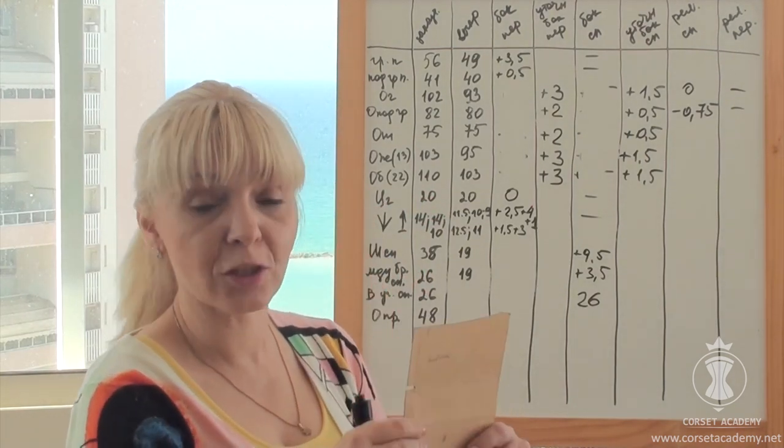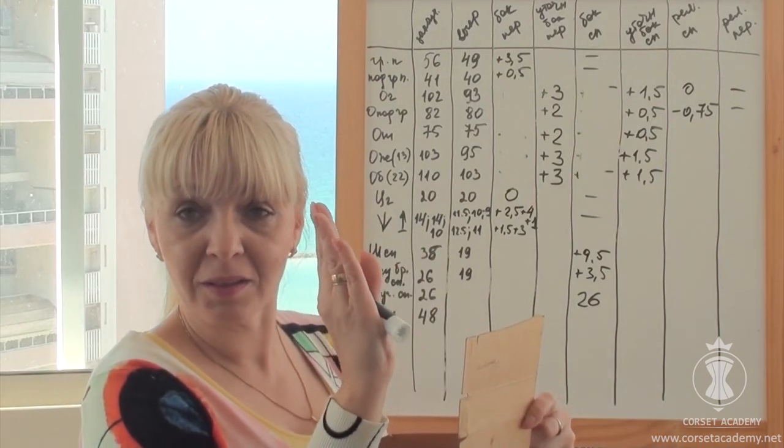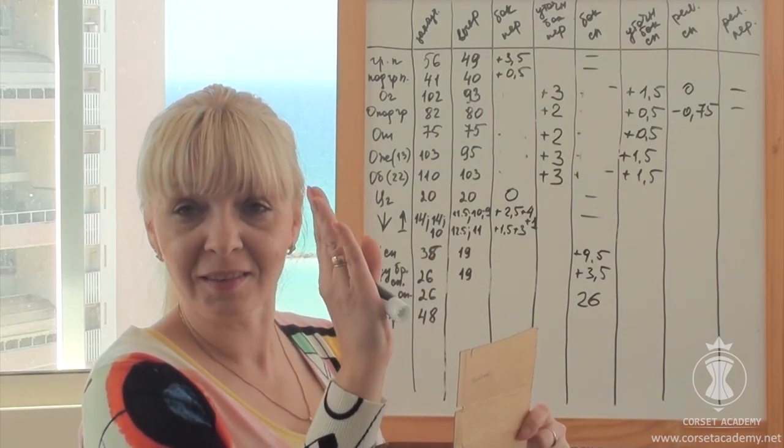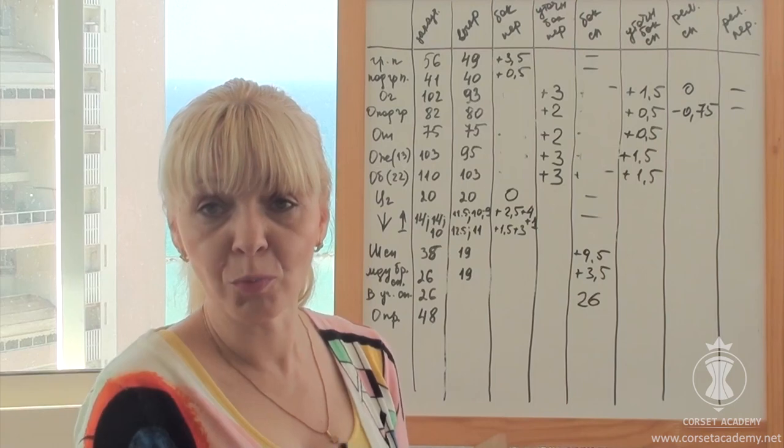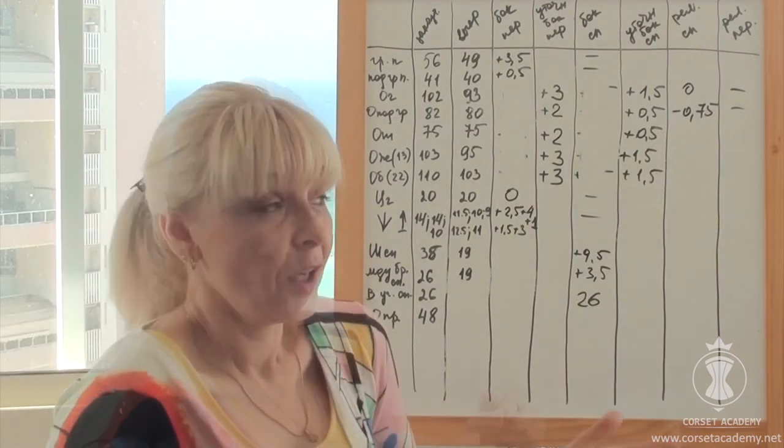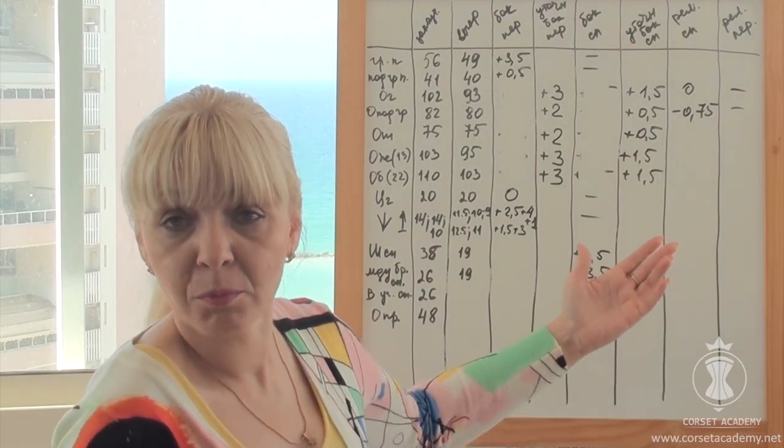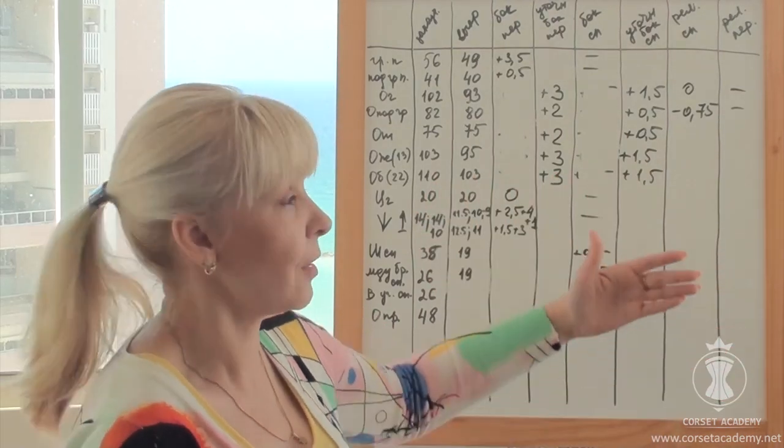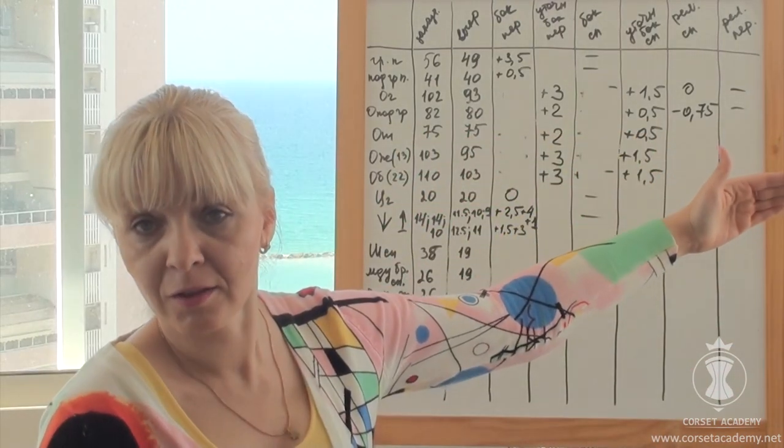We don't want the back of the corset to bite into the client's back. When we deepen the dart at the back, its top edge gets automatically pulled away from the body. This very trick is going to help us achieve proper fitting of the garment from the back. It comes naturally. We didn't take any additional measures. The values provided us with all necessary information.